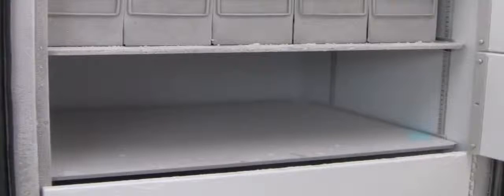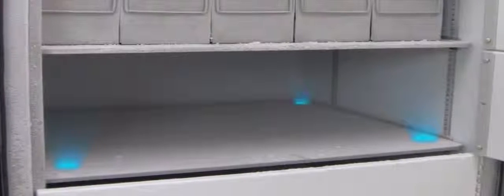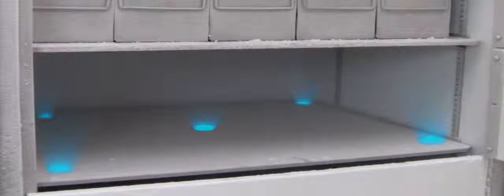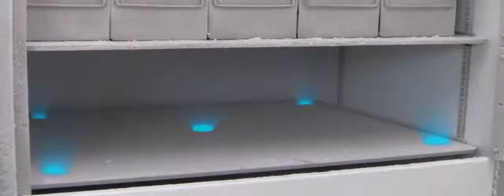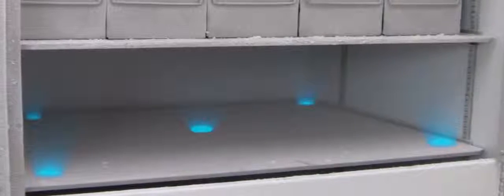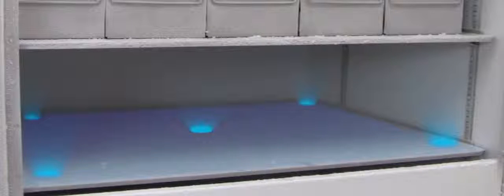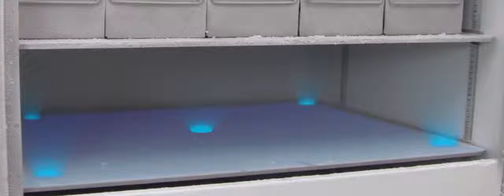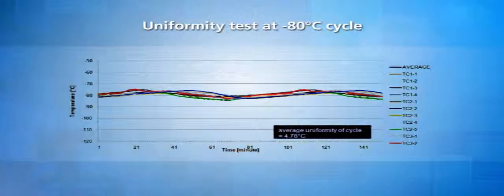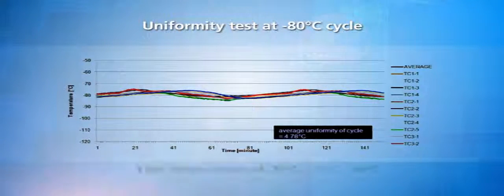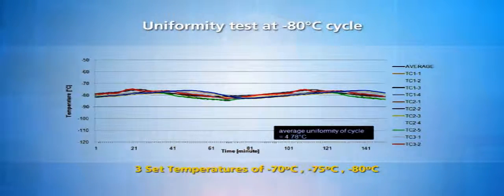Uniformity test measures the difference between the coldest spot and warmest spot in the freezer chamber when the freezer is operating at set temperature. The smaller the difference, the higher the chance that all samples are stored at the desired set temperature. A poorly designed ULT freezer may have warm spots that are 20 degrees Celsius higher than the cold spots. Esco ULT freezer can achieve excellent uniformity of less than 5 degrees Celsius at 3 set temperatures under factory test conditions.